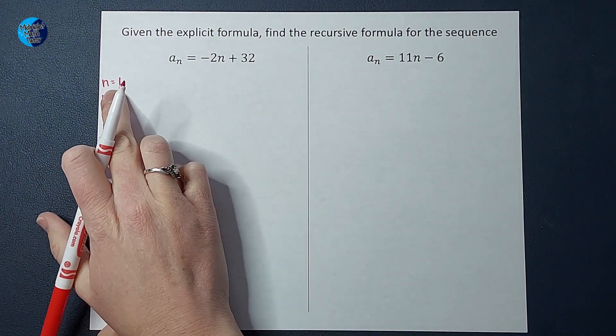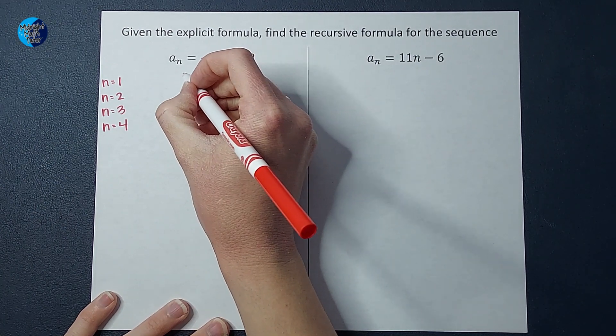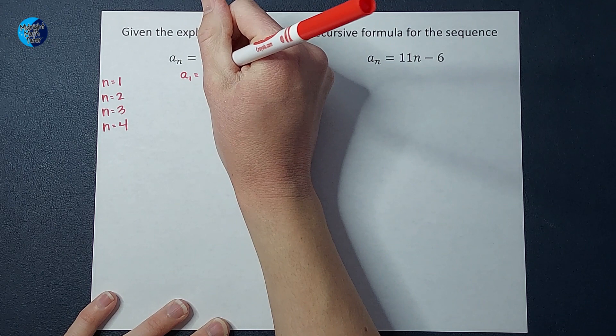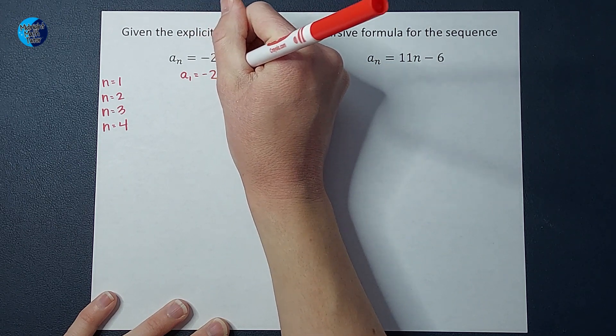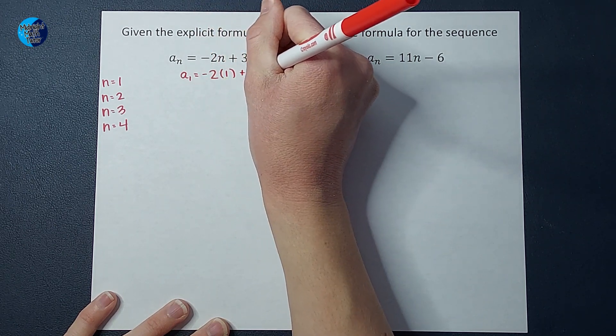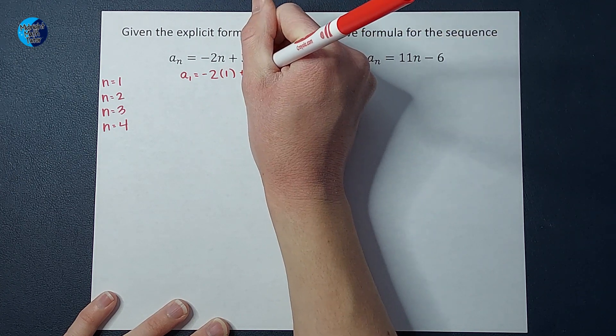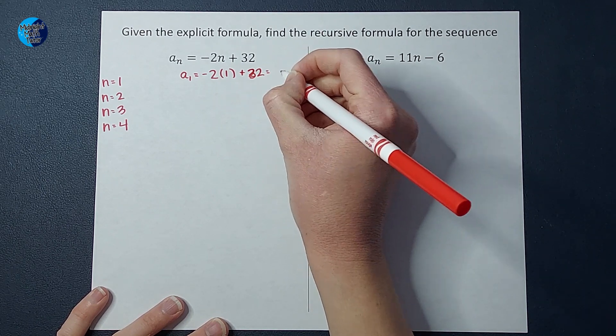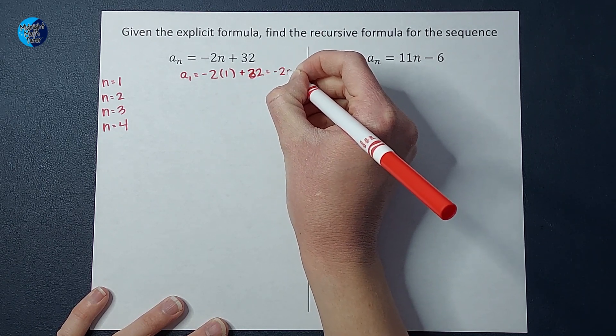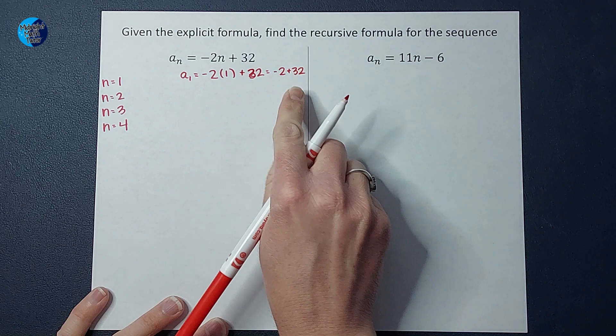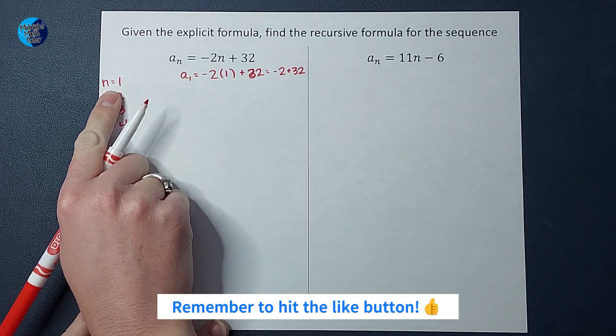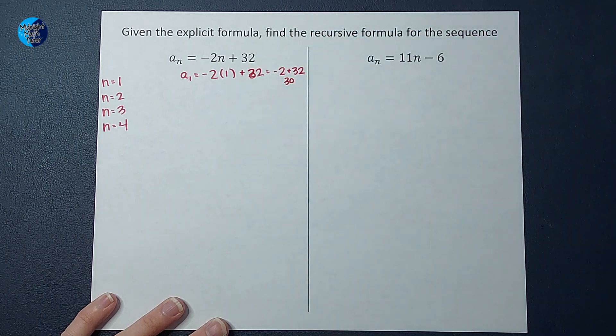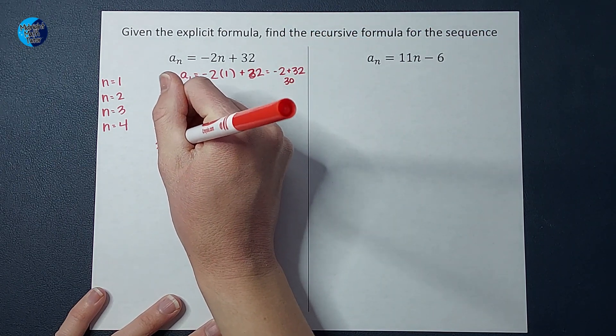So if I plug in one for n, I am going to get a sub one, or the first number in my sequence is negative two times n, which is one plus 32. Oh, not 22 guys, 32. Write down what you say. Okay, so then that would give me negative two plus 32, which would end up giving me 30. So when I plugged in one for n, I got 30, which means that the first number in my sequence is 30.